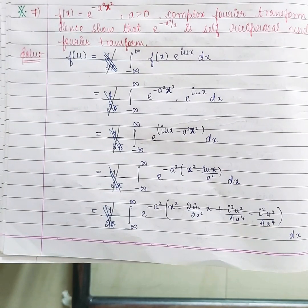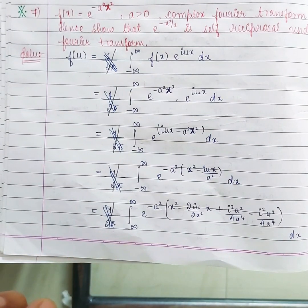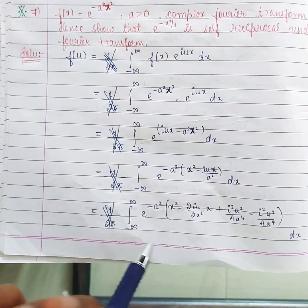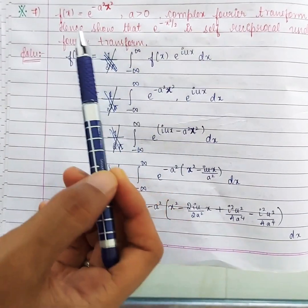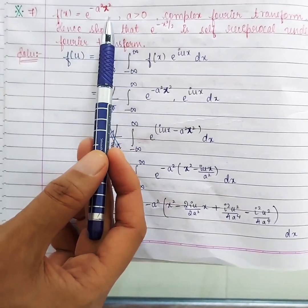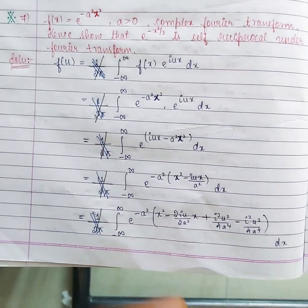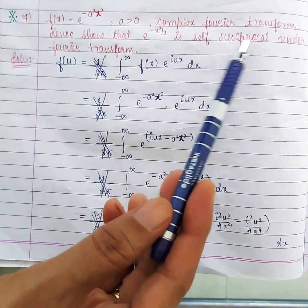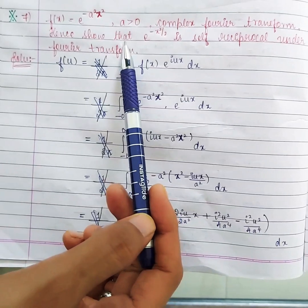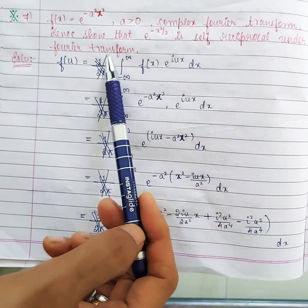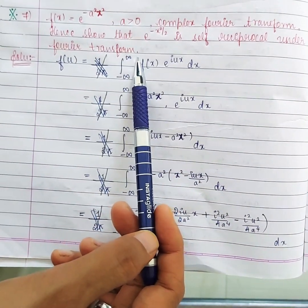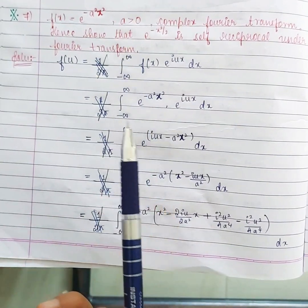In this video let us solve one more problem in Fourier transform. In the last video we started Fourier transform and we used inverse Fourier transform to evaluate an integral. Whenever you see the word 'evaluate an integral,' inverse Fourier transform will come. For the function f(x) = e^(-a²x²) where a > 0, find the complex Fourier transform and hence show that e^(-x²/2) is self-reciprocal under Fourier transform — meaning the answer will be in the same format as the question.